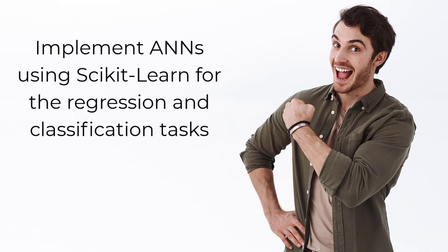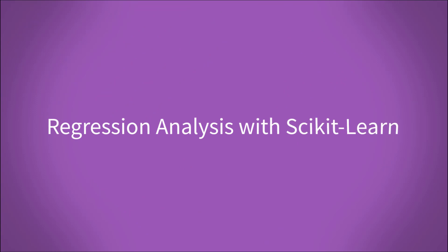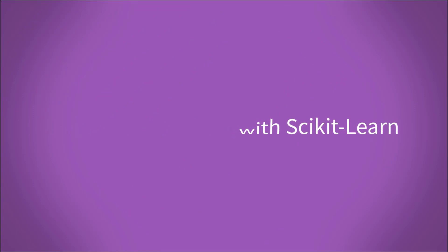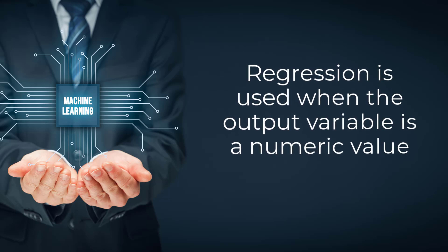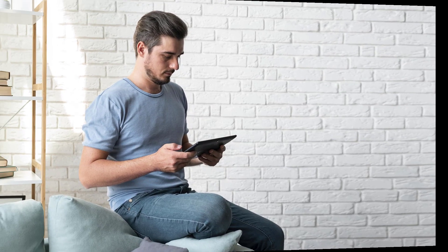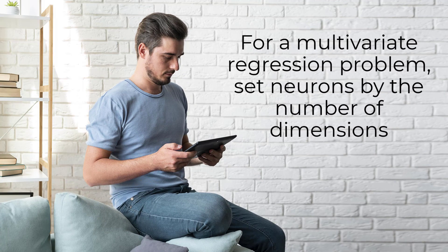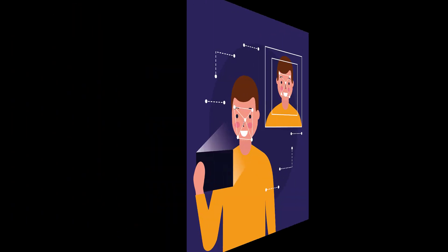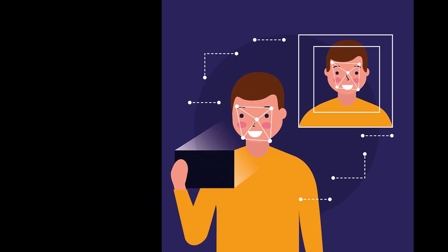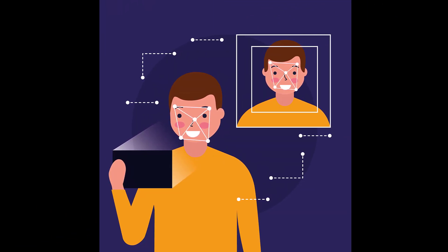First, let's discuss how to perform regression analysis with the ANN algorithm. Regression is used when the output variable is a numeric value, such as salary or age. In this analysis, we want to predict a numerical value, so the output of our neural network should be a single neuron. Note that if you tackle a multivariate regression problem, you add neurons by the number of dimensions. For example, to find the center of an object in an image, you need to predict a two-dimensional coordinate system, so you need to place two neurons in the output layer.